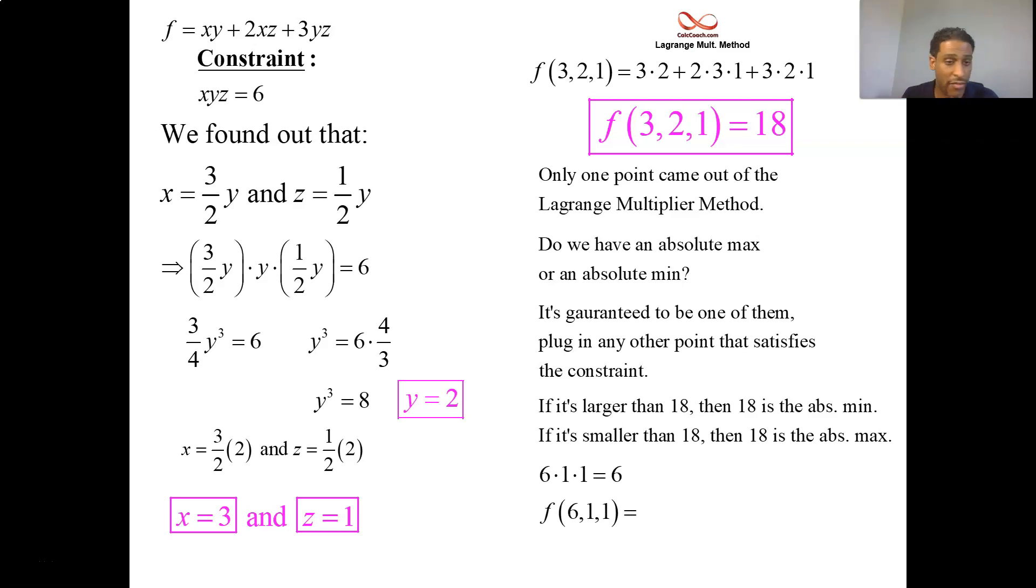If that value that comes out for plugging in that X, Y, and Z, if that value that comes out is larger than 18, then 18 couldn't have been the max. Absolute max. And if that number that comes out is smaller than 18, then 18 couldn't have been the min. We know it's either a max or a min. So this will tell us then which one we have. What I've come up with is 6, 1, 1. The product of those guys happens to be 6. You plug those guys into your function. You get something more than 18. You get a 6, then you get a 12, and then you get a 3. And so you get 21. Now, this is supposed to be an extreme value. 18 is supposed to be extreme value. How can you have the constraint true and get something bigger than that? It must be that your extreme value is the absolute minimum.